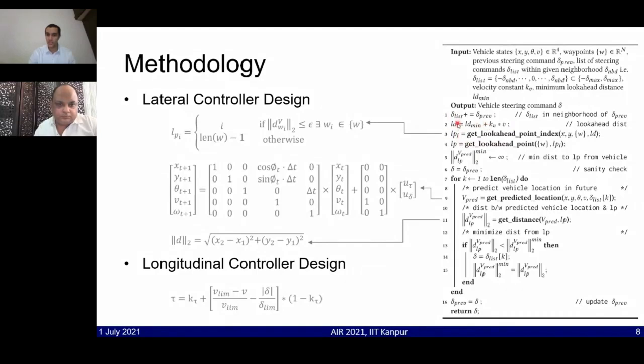Based on the computed lookahead point and the current vehicle's position, we then compute a lookahead point index using this particular set of equations, which basically means that if there is a waypoint available in the waypoint list that lies in the threshold value epsilon of the current vehicle pose, then we return that, else we just return the last waypoint to avoid instability.